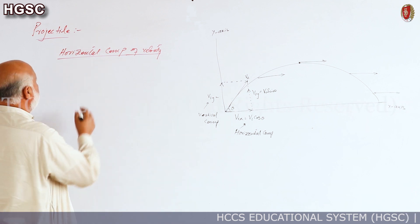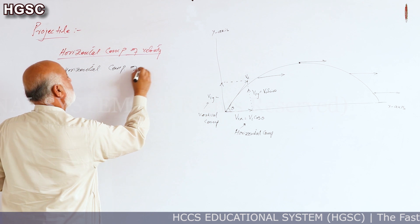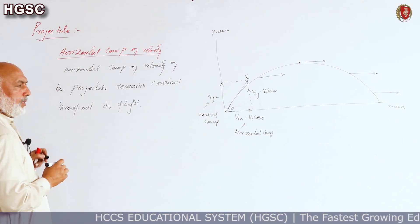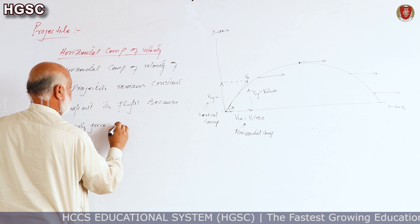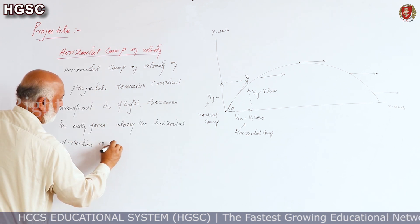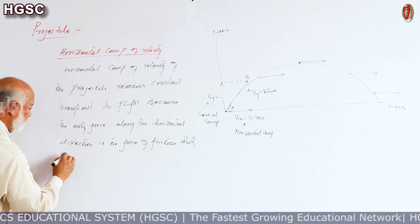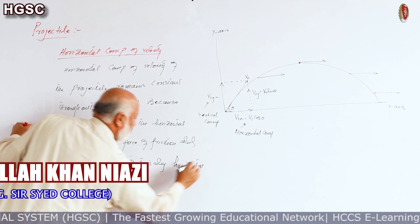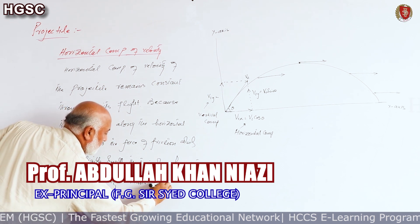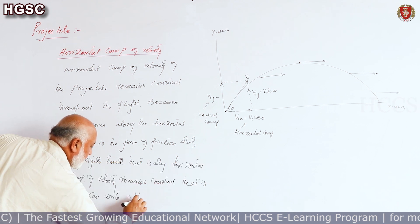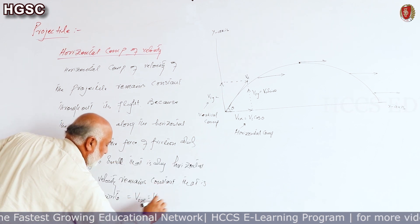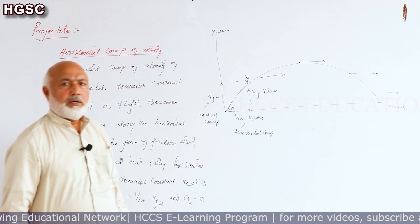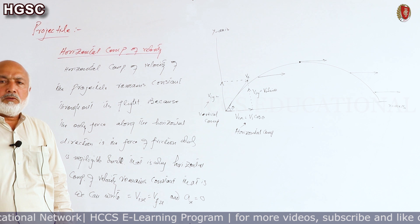To summarize: the horizontal component of velocity of the projectile remains constant throughout its flight because the only force along the horizontal direction is friction, which is negligibly small. Therefore, vix = vfx and ax = 0. The graph representing horizontal component shows a constant horizontal line.